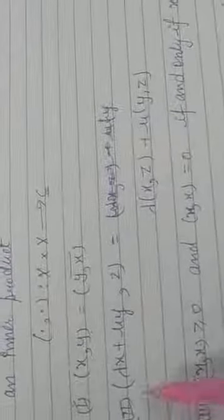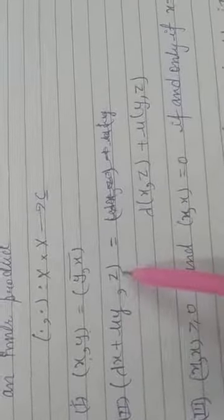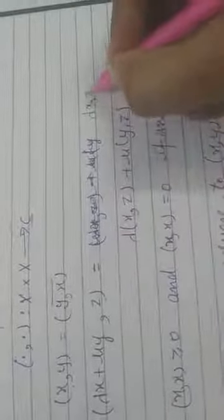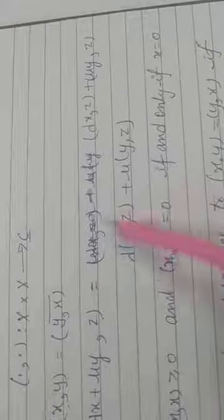Then the second one is: lambda x plus mu y comma z, where lambda and mu are scalars. Then we can take lambda out to get x comma z, and mu out to get y comma z.